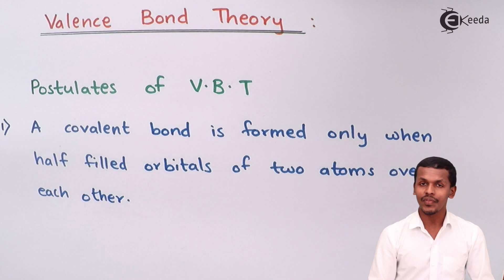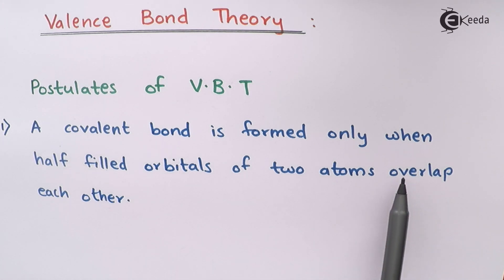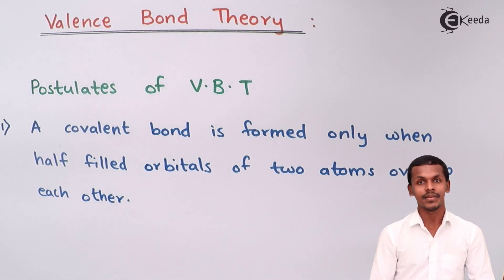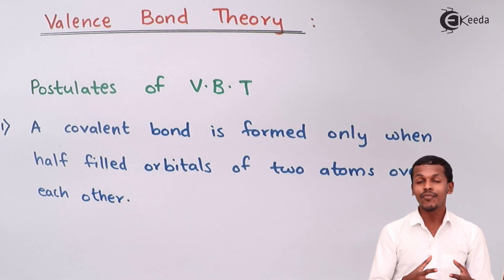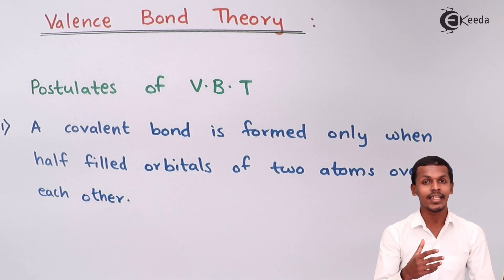Let us understand the postulates one by one. The first postulate is: a covalent bond is formed only when the half-filled orbitals of two atoms overlap each other. Talking about noble gases — noble gases don't consist of unpaired electrons. All electrons in the valence shell are completely occupied, so there is no chance of forming an unpaired electron, and that is why noble gases don't form bonds with any other compound.